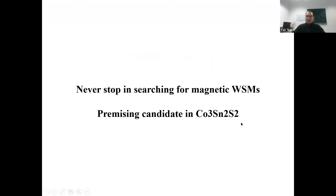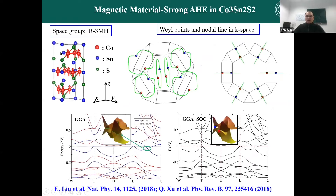So far, the most promising compound is Co3Sn2S2 (cobalt-tin-sulfide). This compound presents ferromagnetic ordering with magnetization along the c-direction. This is the crystal structure and magnetic structure. Because it has mirror symmetry, the band structure also presents a nodal-line band structure. When spin-orbit coupling is turned on, the nodal line is broken by opening a band gap, but at the same time you can have one pair of Weyl points on the nodal line.